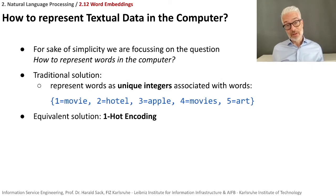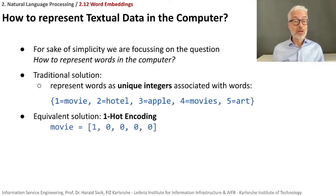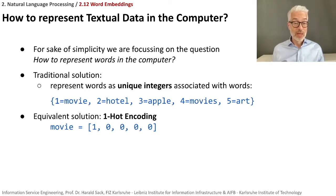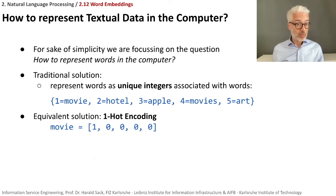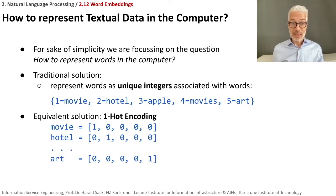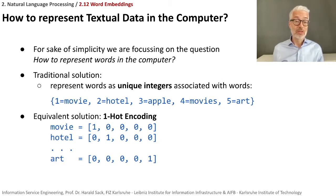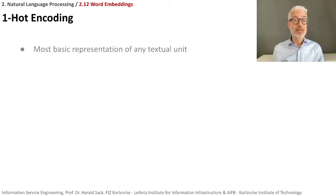Another approach, more common in computer science, is to encode words in a vector using one-hot encoding. This means for each single word, the vector has one dedicated dimension for that word. For example, 'movie' would have a one in the first dimension and zero everywhere else. 'Hotel' would be the second dimension, 'apple' the third, 'movies' the fourth, and 'art' the fifth.